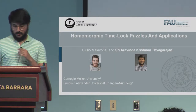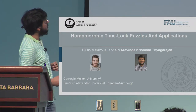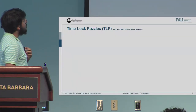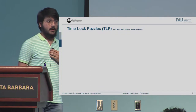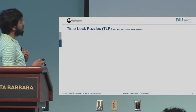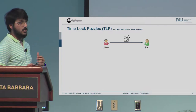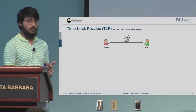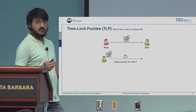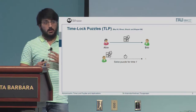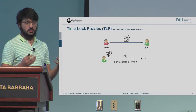Welcome everyone. I'm going to talk on homomorphic timelock puzzles and applications. Let's move straight to what the primitive is. Timelock puzzles, a concept first envisaged in 1993 and later proposed by Rivest, Shamir, and Wagner in 1996, is basically Alice choosing to have a solution embedded inside a puzzle and giving it to Bob. Bob takes this puzzle and tries to solve it for some amount of time T and eventually obtains the solution that was originally embedded.